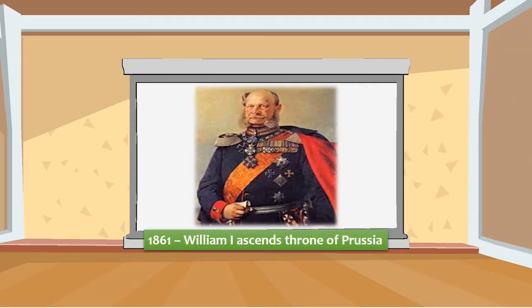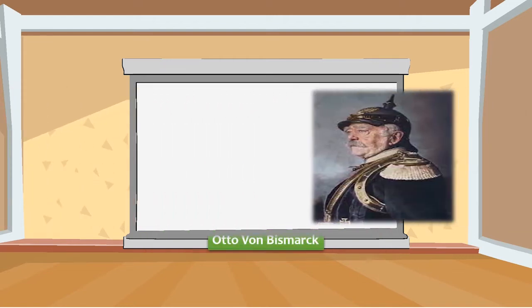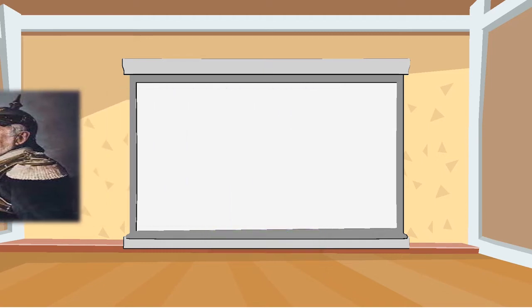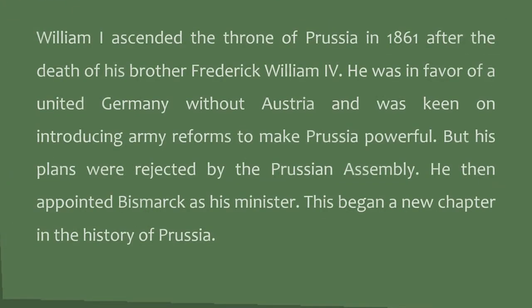Next, let's talk about the rule of William I. William I ascended the throne of Prussia in 1861 after the death of his brother Frederick William IV. He was in favor of a united Germany with Austria and was keen on introducing army reforms to make Prussia powerful, but his plans were rejected by the Prussian assembly. He then appointed Bismarck as his minister, and thus began a new chapter in the history of Prussia.